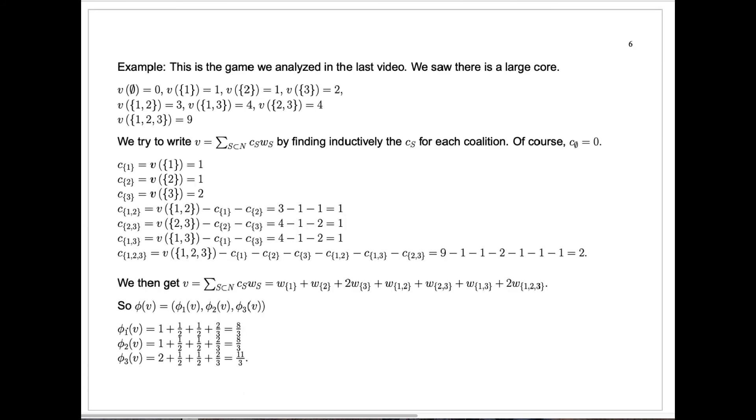Here's another example. This is an example of the game that we analyzed in the videos for the previous day when we computed the core. We found the core for this characteristic function. There were a lot of payoff vectors in the core. How are we going to compute the Shapley value for a game like this? Well, you see it's a bit complicated. Player one has a value by himself of one, player two by himself is just one, player three by herself is just two, etc.